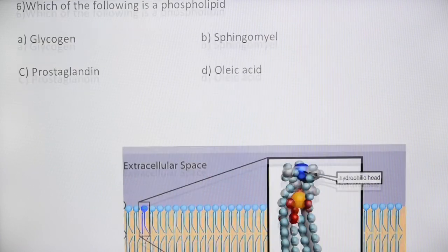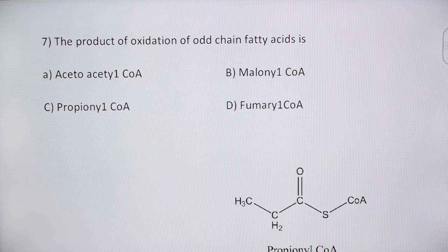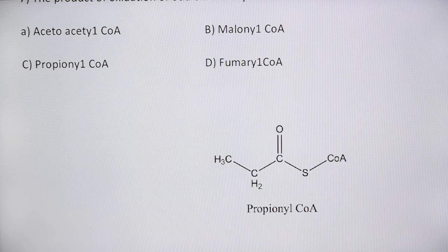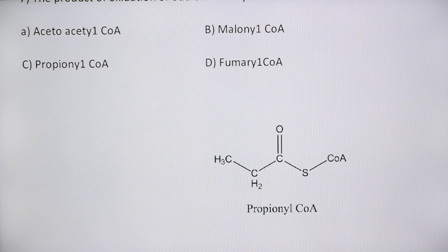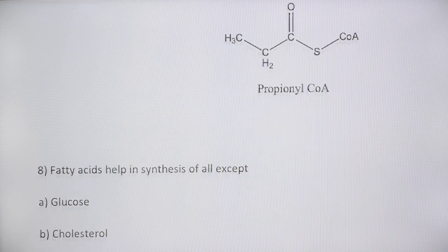Next question: the product of oxidation of odd-chain fatty acids is propionyl-CoA. Fatty acids with an odd number of carbon atoms are relatively rare in mammals but common in plants and marine organisms. These odd-chain fatty acids are oxidized the same way as even-chain fatty acids until the formation of propionyl-CoA, which is then converted to succinyl-CoA, entering the citric acid cycle for further metabolism. Option C is the answer.